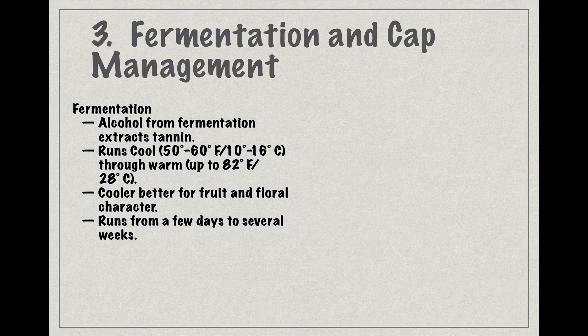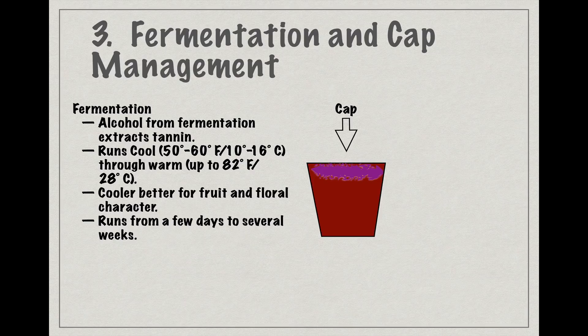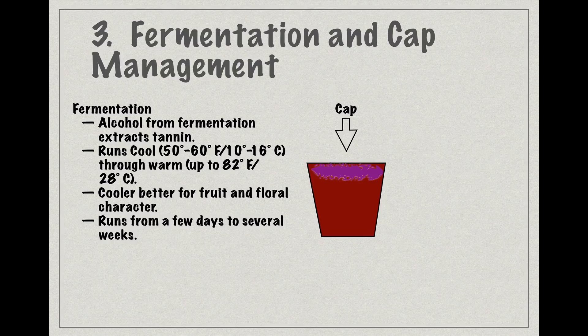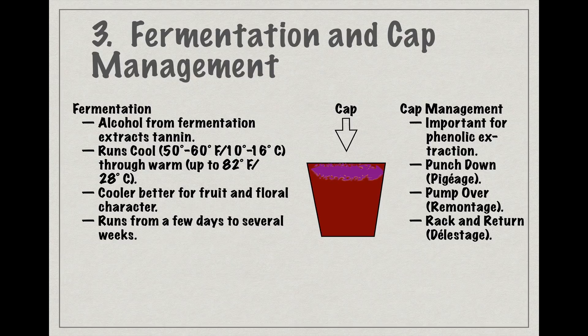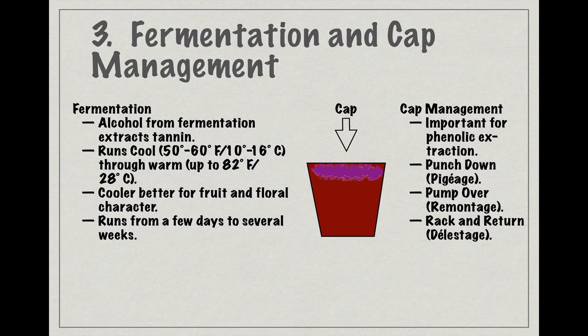Thanks to the carbon dioxide that forms as a byproduct of fermentation, the grape skins and pulp will rise to the top of the tank or vat that the wine is fermenting in and form a thick cap. Careful management of this cap of skins and pulp ensures that the cap remains in contact with the wine to maximize extraction of pigment, flavor, and tannin. There are three basic strategies to managing the cap that a winemaker can employ.